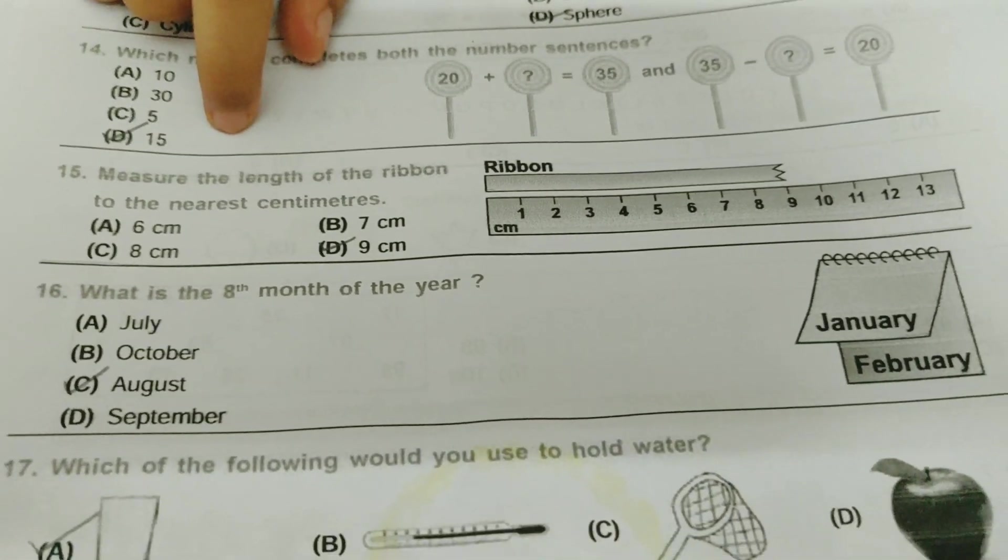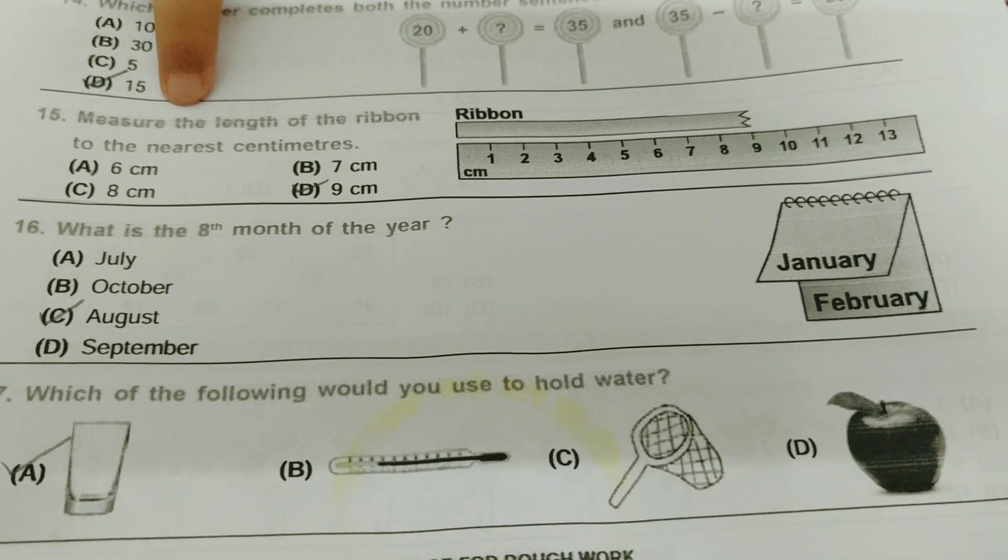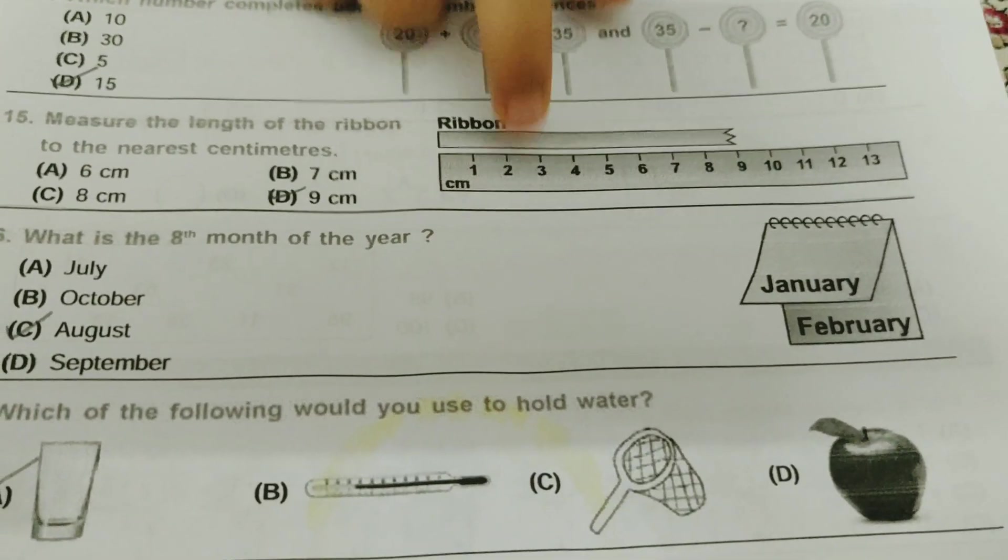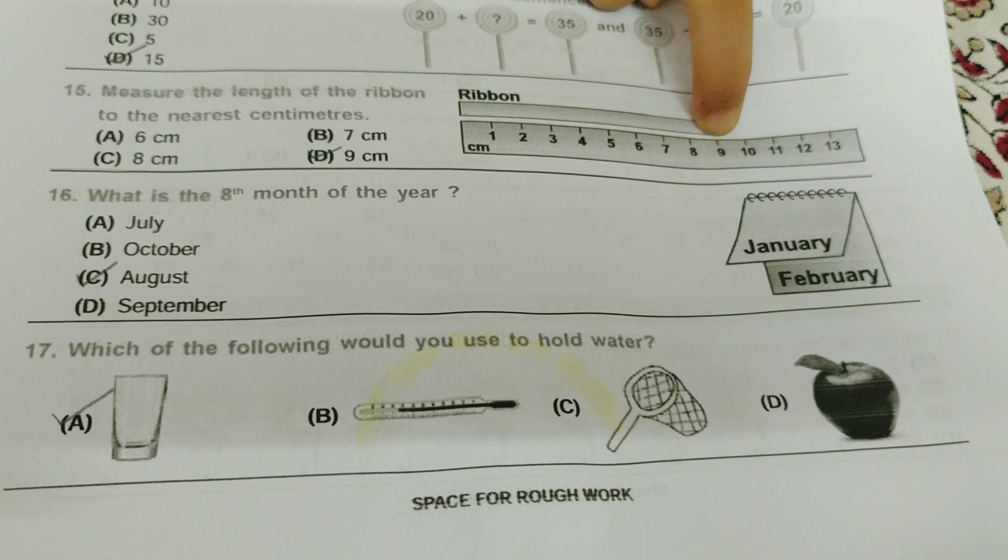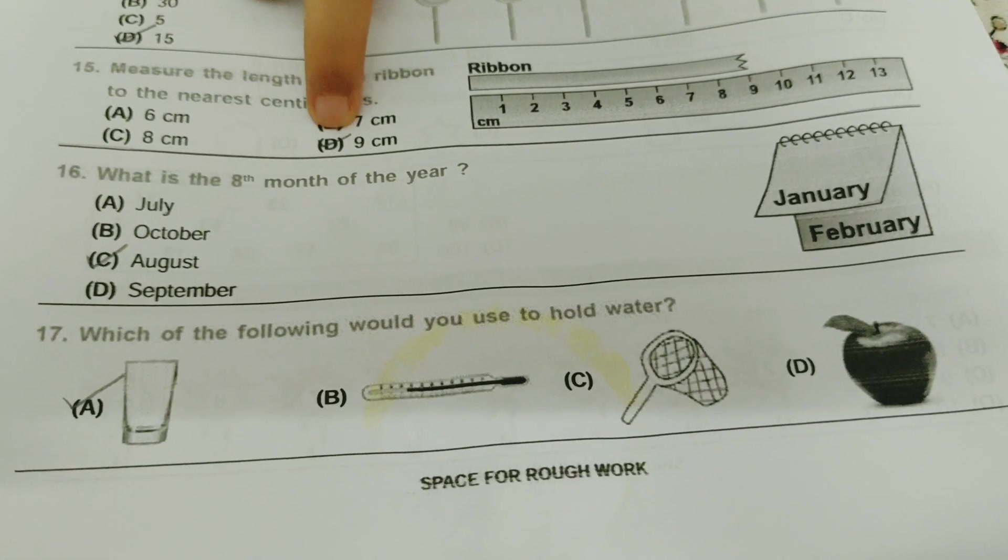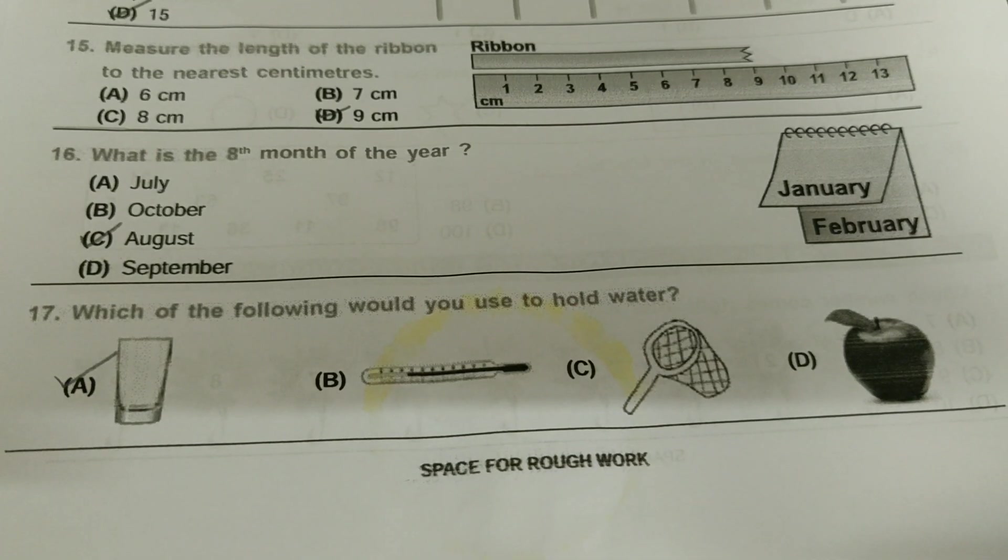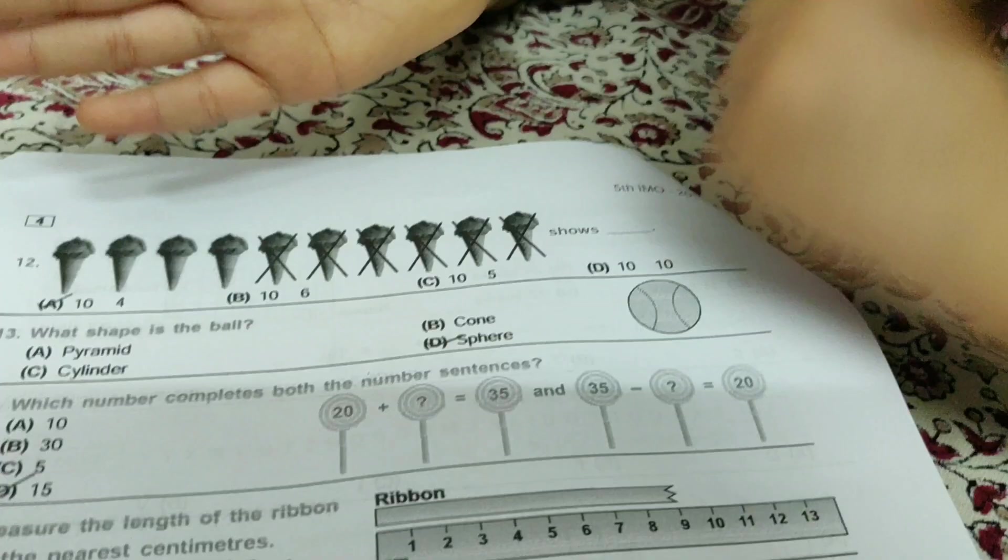Measure the length of the ribbon to the nearest centimeters. So here's the ribbon, here's the scale in centimeters. So I can see that the ribbon is coming till 9 centimeters. 9 is the B bit. What is the 8th month of the year? 8 month, and I got it as August.